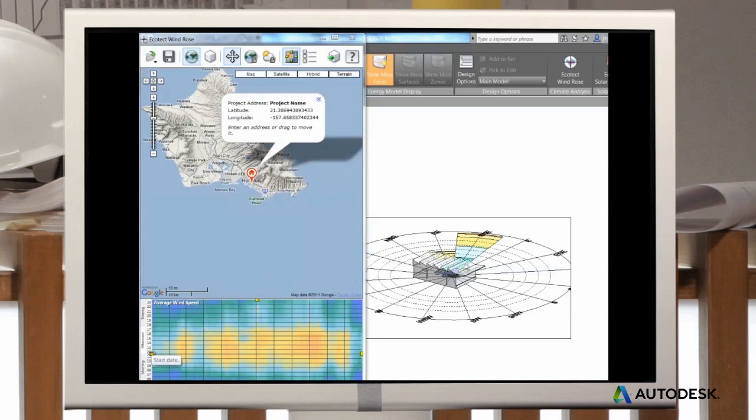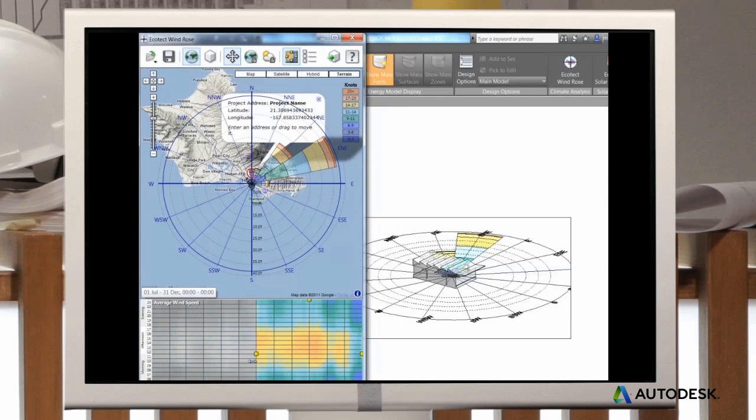You can consult a wind rose diagram for your location to find out how often the wind blows from different directions, at what speeds, and even its temperatures. Throughout the year and even throughout the day, environmental conditions change, so your building needs to adapt.